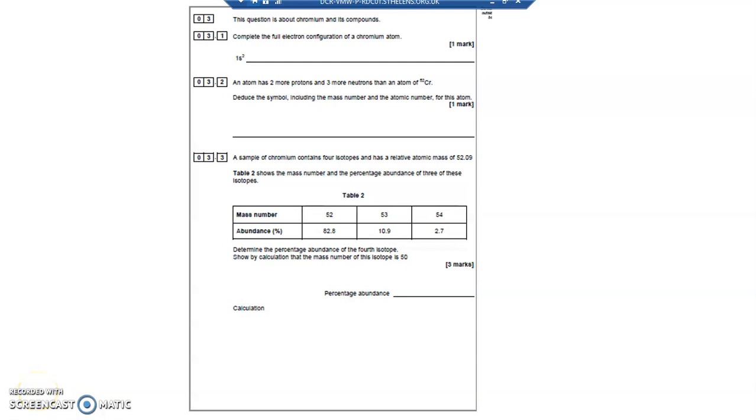Question 3.1: complete the full electron configuration of a chromium atom. Now, chromium has got an atomic number of 24, so it's got 24 electrons and 24 protons as well.